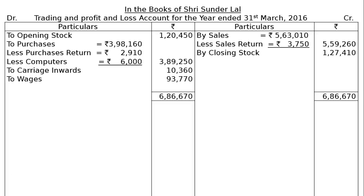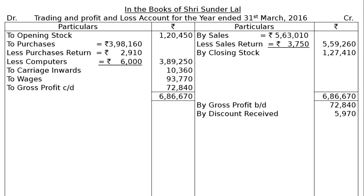Note down the credit side total and find out the difference to get gross profit brought down, that is Rs. 72,840. Take it to the credit side of the profit and loss account as 'by gross profit brought down' Rs. 72,840. The other item on the credit side is discount received. Discount allowed is an expenditure, while discount received is an income.